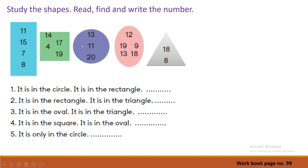Now look at the purple circle. There are 3 numbers — 13, 11, 20. Next, it's a pink oval. What are the numbers? 12, 19, 13, 9, 18. Last, there is a triangle. What are the numbers? 18 and 8.